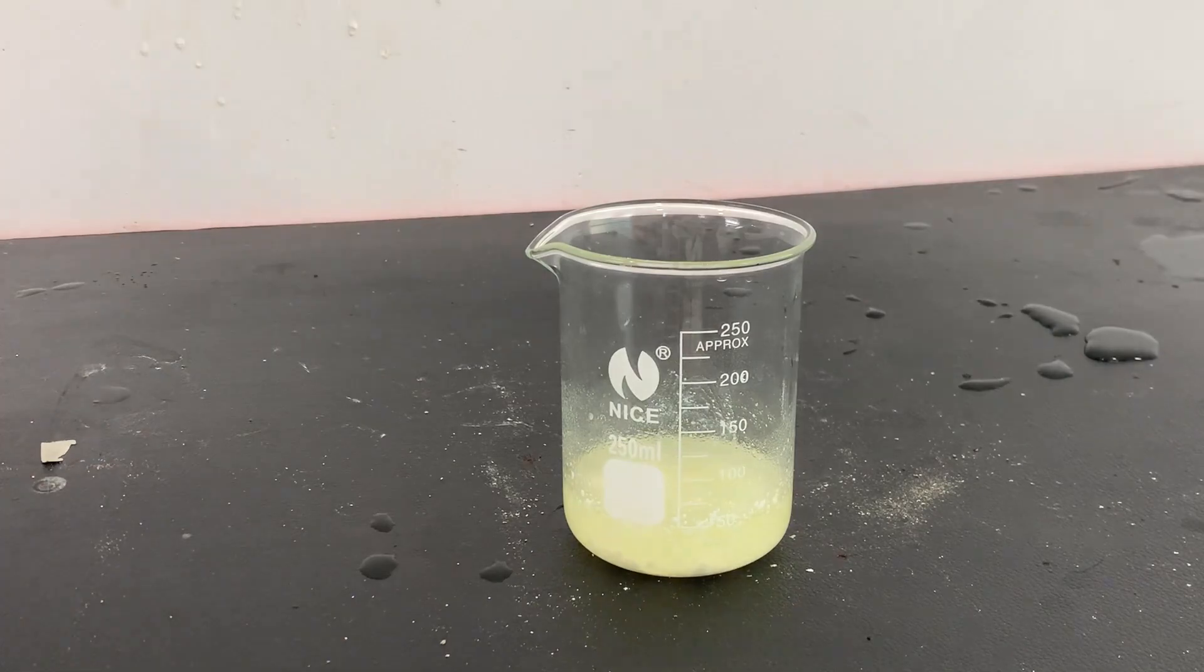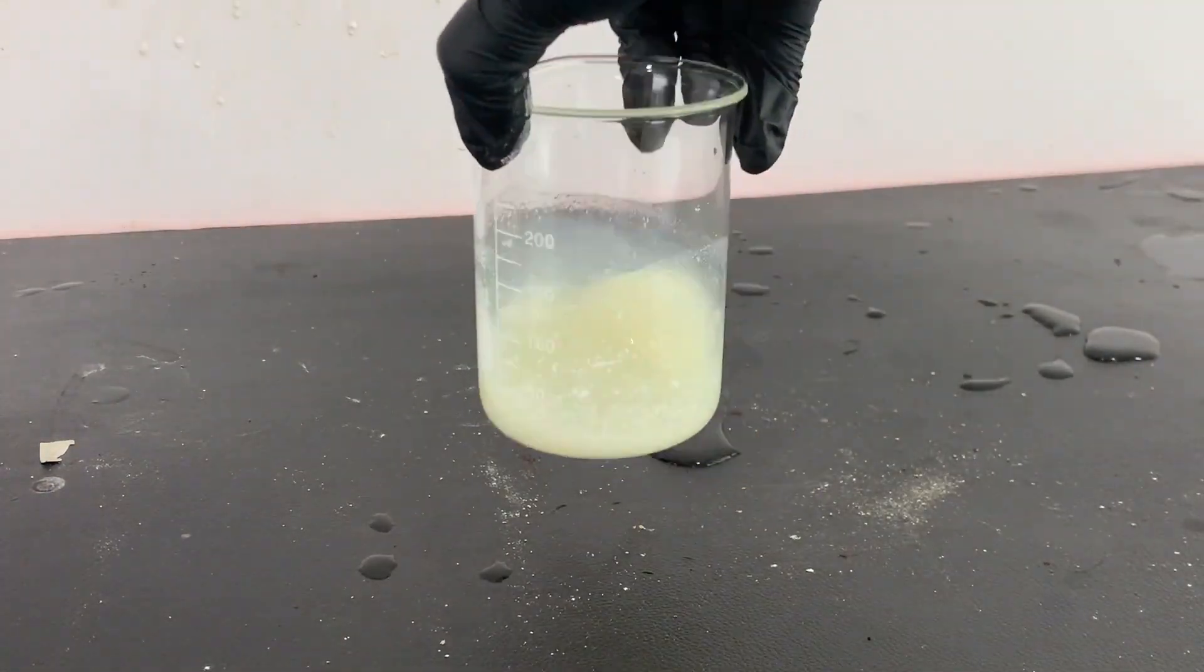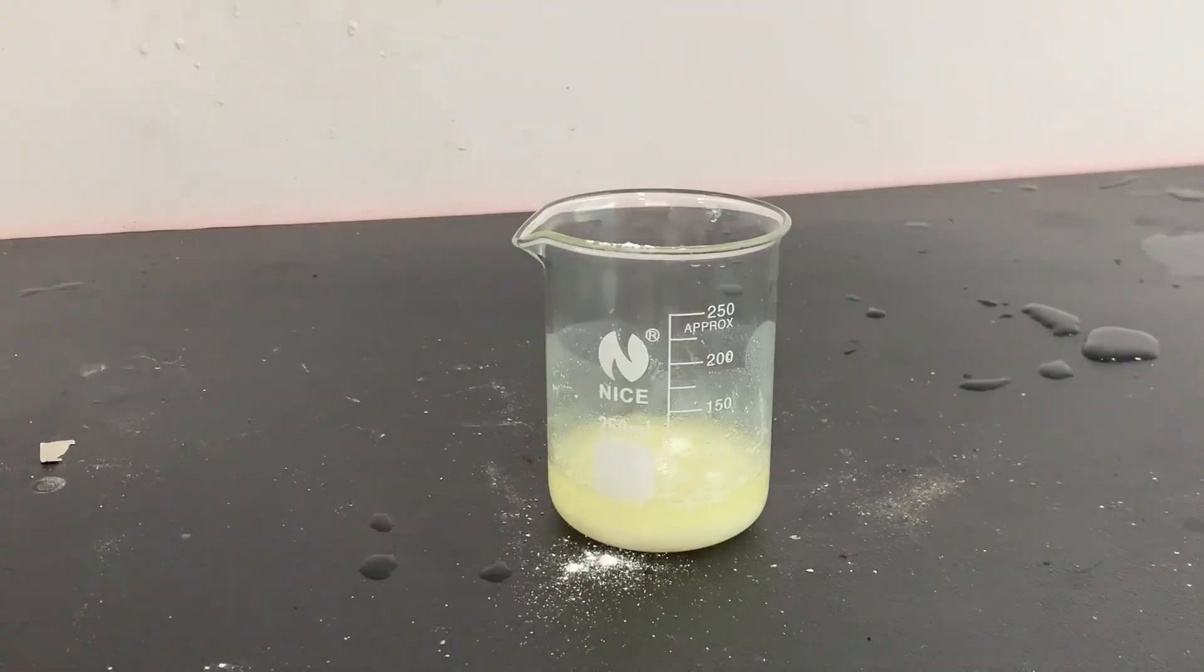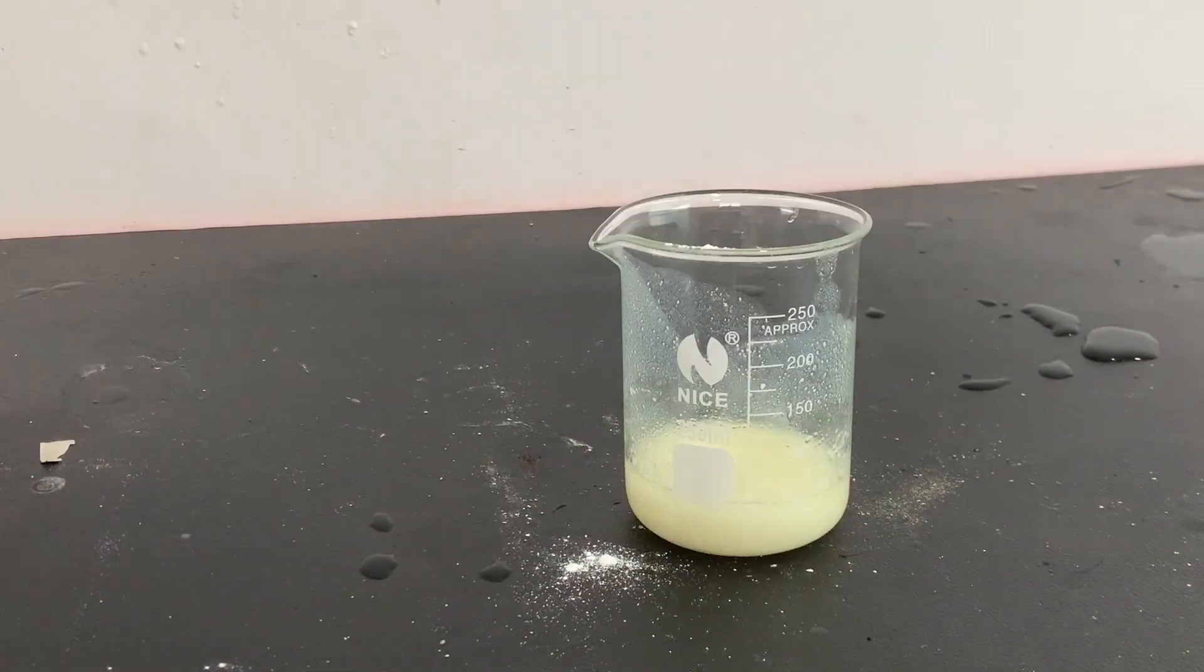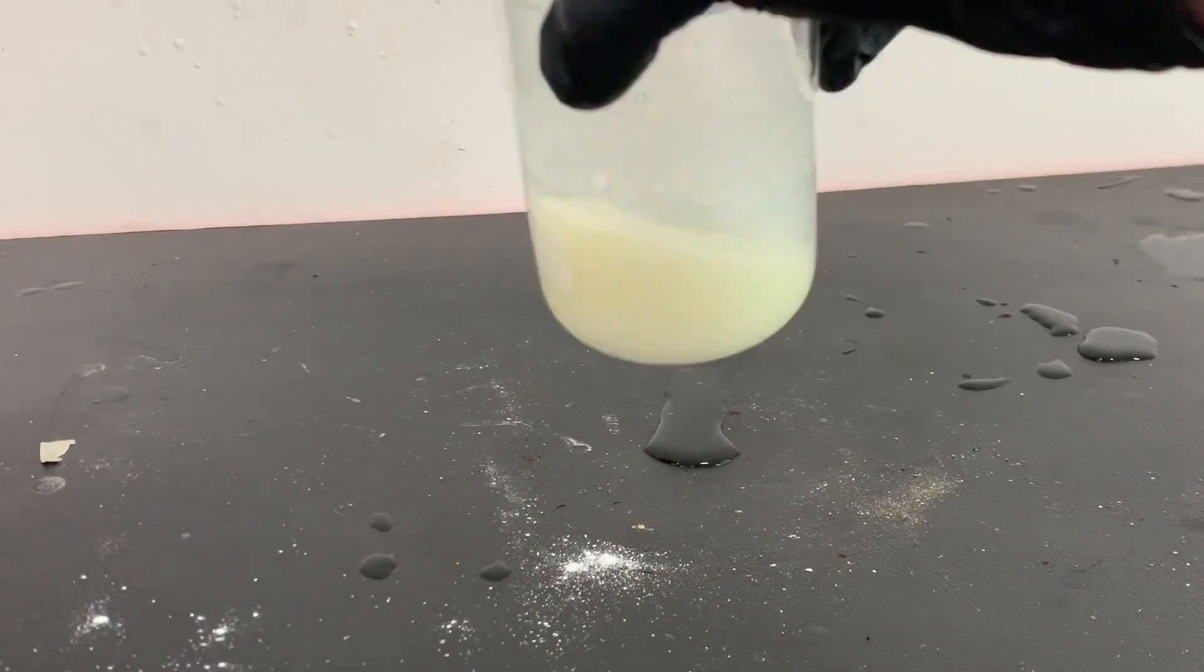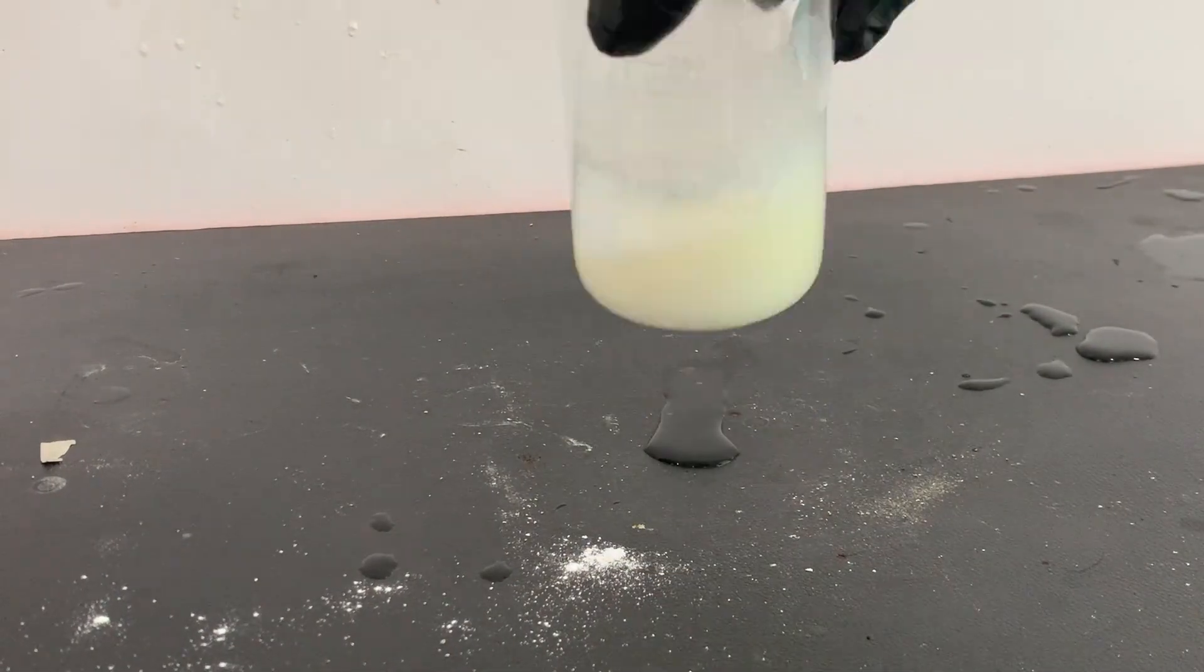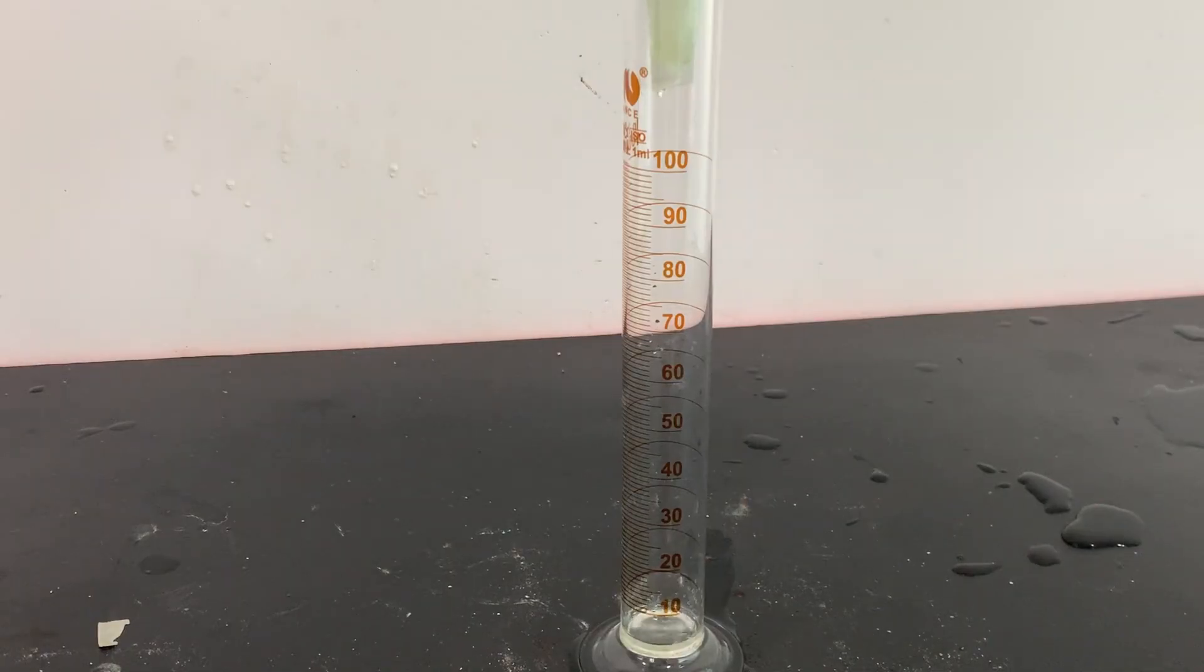The nitrobenzene was then dried with some anhydrous magnesium sulfate. Ideally, only 2-3 spatulafuls of anhydrous magnesium sulfate would be needed, but as you can see in the clip, I added more than that which caused a low yield. As most of the magnesium sulfate absorbed the nitrobenzene, it made it harder to filter through.